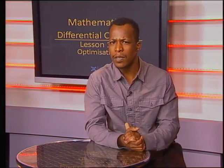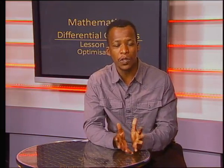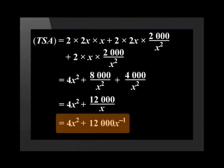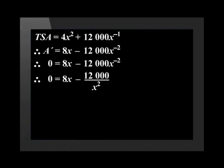Can you think of how to do this? Remember, the gradient of the tangent is equal to zero at a maximum or minimum point. Therefore, the derivative is equal to zero. We determine the derivative of the total surface area and set it equal to zero. We write all variables as numerators first: the total surface area equals 4x squared plus 12,000 x to the power of minus 1. We then set the derivative equal to zero, and rewrite 12,000 x to the power of minus 2 as 12,000 divided by x squared.